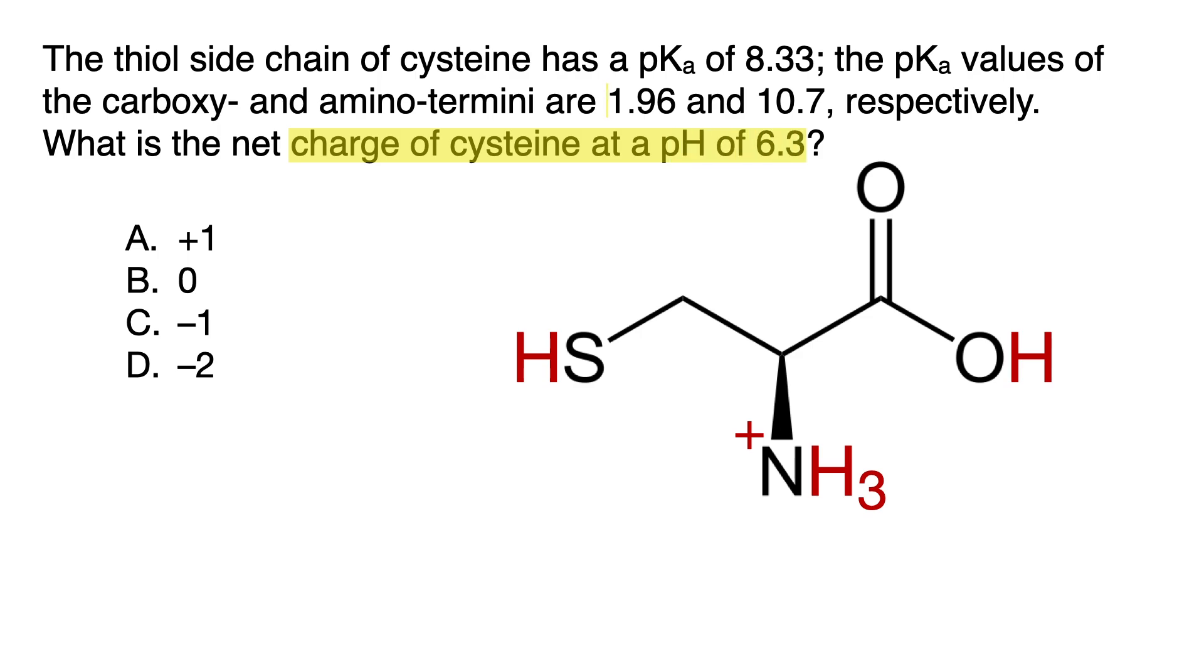well 6.3 is higher than 1.96, meaning the carboxy terminus was already deprotonated way back when the solution was at a pH of 1.96, so we'll have a negative charge on the oxygen. But the pH of 6.3 is not as high as the second highest pKa of 8.33, which means the side chain will not be deprotonated, nor will the amino terminus,